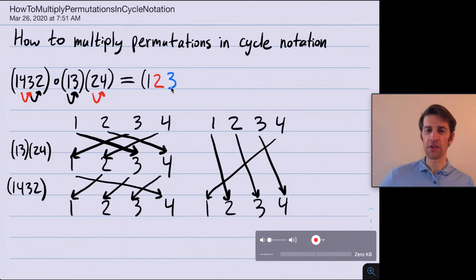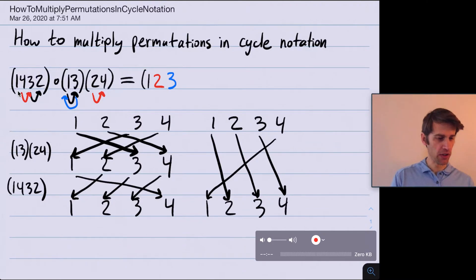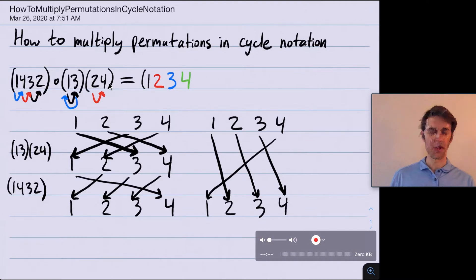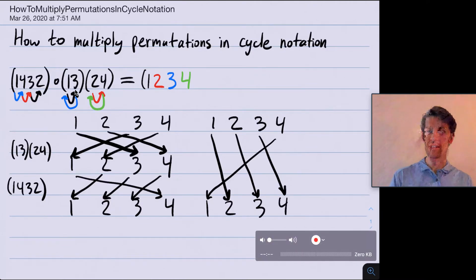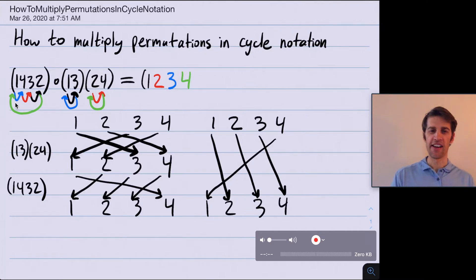Now let's see where 3 goes. (2, 4) doesn't send 3 anywhere. (3, 1) sends 3 to 1. And then (1, 4, 3, 2) sends 1 to 4. So 3 is going to 4. Finally, where does 4 go? (4, 2) sends 4 to 2. (1, 3) doesn't move 2 anywhere. And (1, 4, 3, 2) sends 2 back to 1. So 4 in total is sent to 2 and then to 1. Since 4 is getting sent back to 1 — the start of the cycle — I close off the cycle parenthesis.